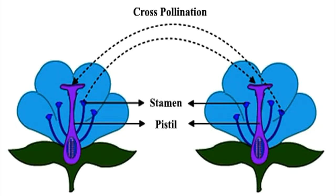Cross-pollination is the transfer of pollen grains from the anther of one plant to the stigma of another plant. Plants that cannot fertilize themselves are called self-sterile, a condition which mandates cross-pollination for the production of offspring. Cross-pollination leads to cross-fertilization and has an advantage of increasing the amount of genetic variation. It is a form of outbreeding.